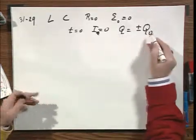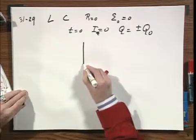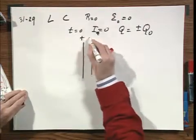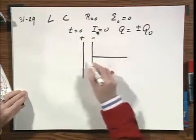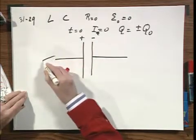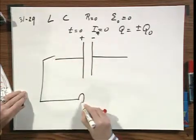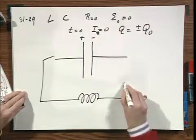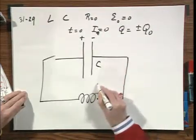One plate of course has a positive charge, and the other plate has a negative charge. I have some kind of a switch here, I have a self-inductance here, this is C, and this is L.